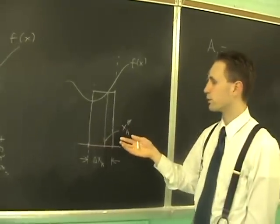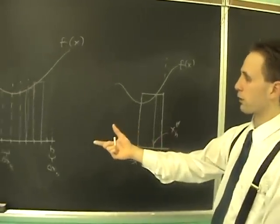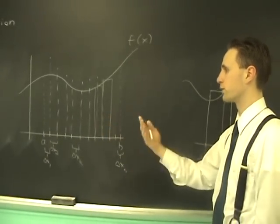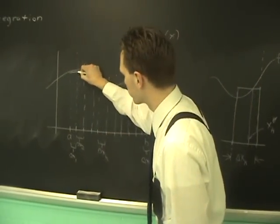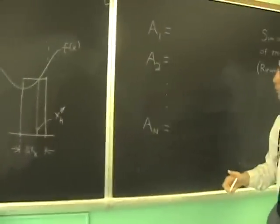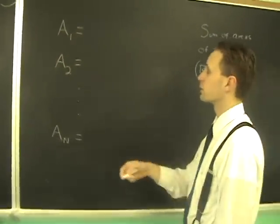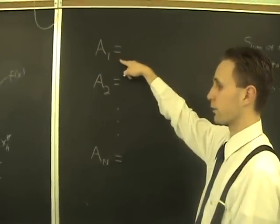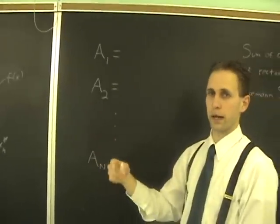This is true for each one of those sub-intervals. There's an x1 star, x2 star, x3 star, and so on. We use each of those to form these rectangles. What we're going to do is just add up the areas. The area of the first rectangle is f of x1 star times delta x1.